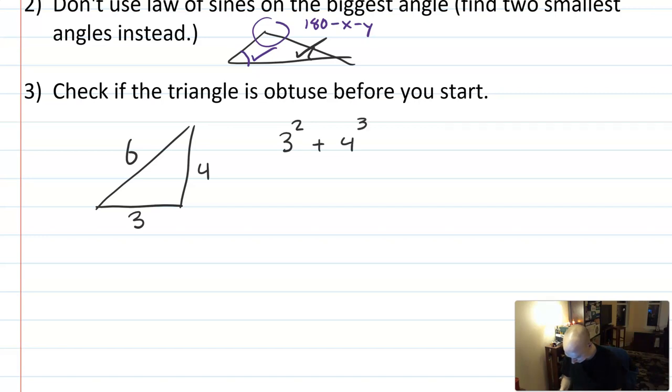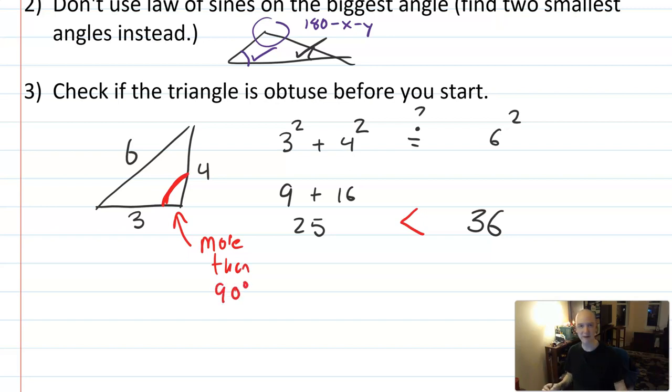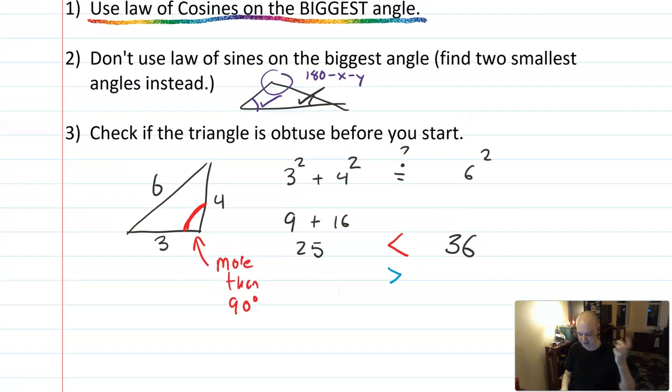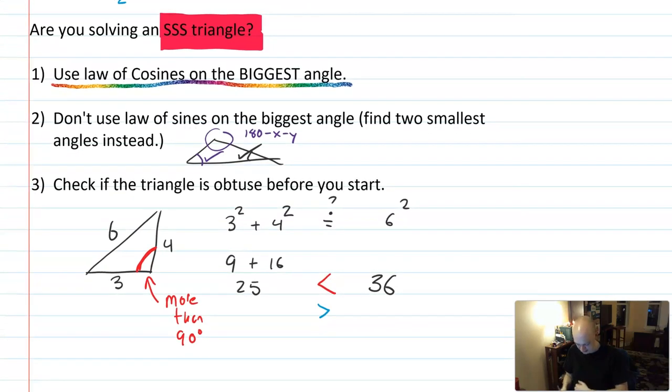One thing you could do is check the two shortest sides in the Pythagorean theorem. And say, hey, how does that compare to 6 squared? So 9 plus 16 is 25. 6 squared is 36, which is larger than 25. So that means that this triangle, that angle has to be more than 90. And of course, if you get exactly equal, then that's exactly 90. And if for some reason you had gotten that the sum of the squares of the legs was smaller, then that would be an acute triangle. And so you kind of knowing what case you're in can tell you if you need to worry about this at all.